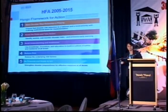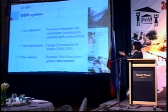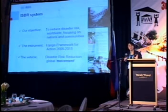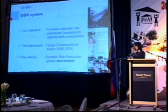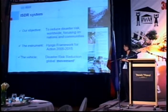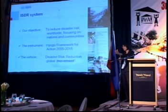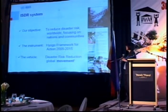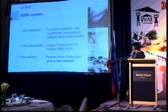To further unfold the disaster risk reduction process and engage more stakeholders from different fields, we created the ISDR system. The ISDR system is very inclusive, but the main body is national governments. The objective is to reduce disaster risk worldwide, focusing on nations and communities. The main instrument we use is the Hyogo Framework, and in order to achieve its overarching goal, we try to make disaster risk reduction a central priority.